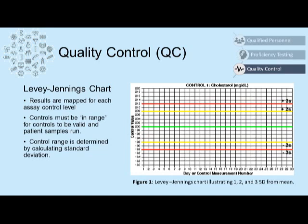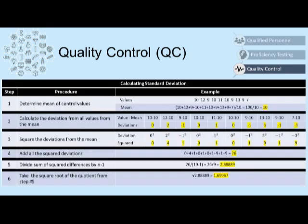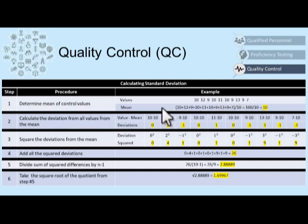The control range is determined by calculating the standard deviation for each control value. To determine the standard deviation, you would take multiple control values — in this case, we have 10 different values: 10, 12, 9, 10, 11, 10, 9, 13, 9, and 7. These are our 10 random control values that we gathered, and the first step is to calculate the mean. The mean is the average, so we're going to average all of our values, which gives us a mean of 10.